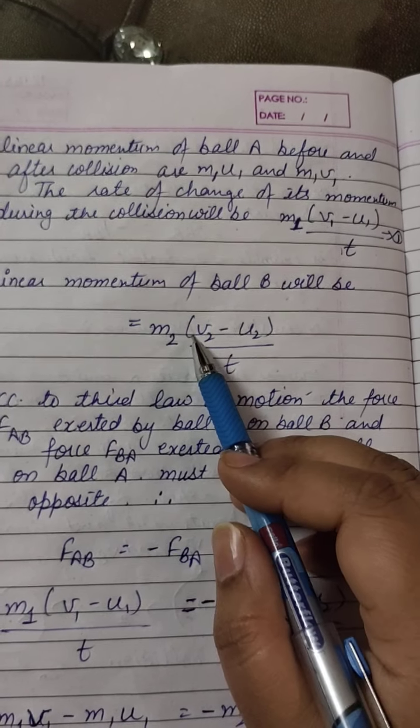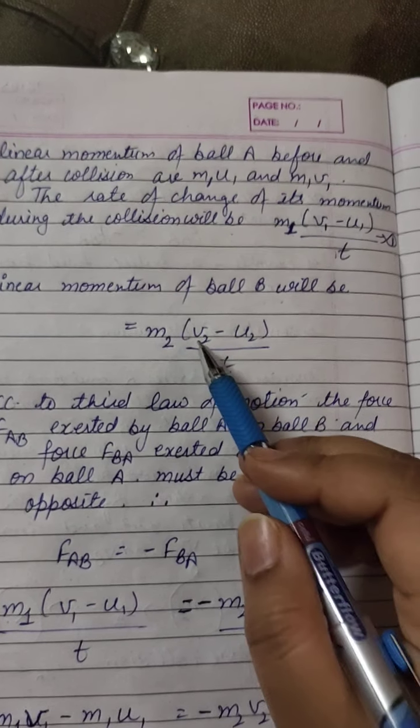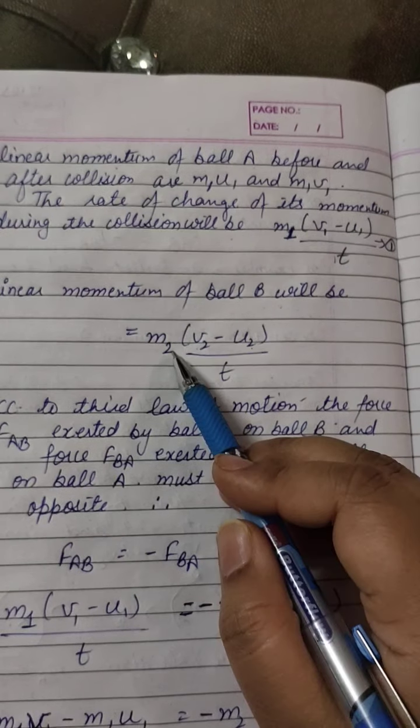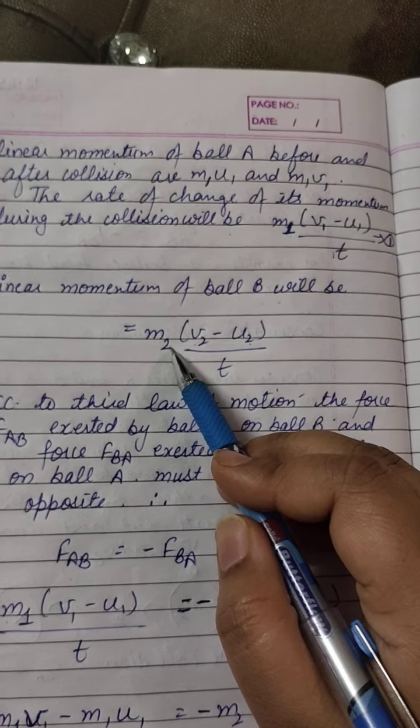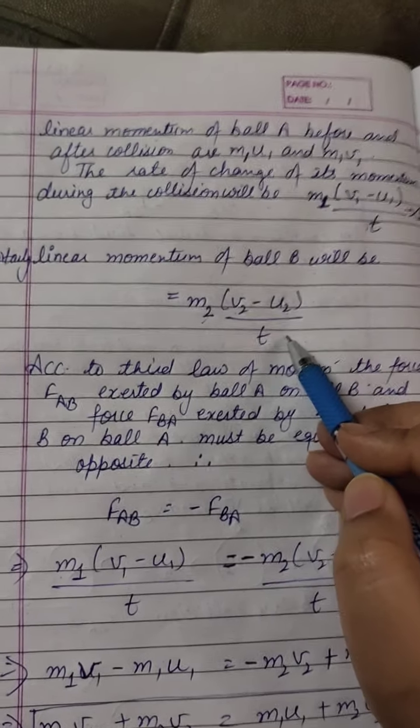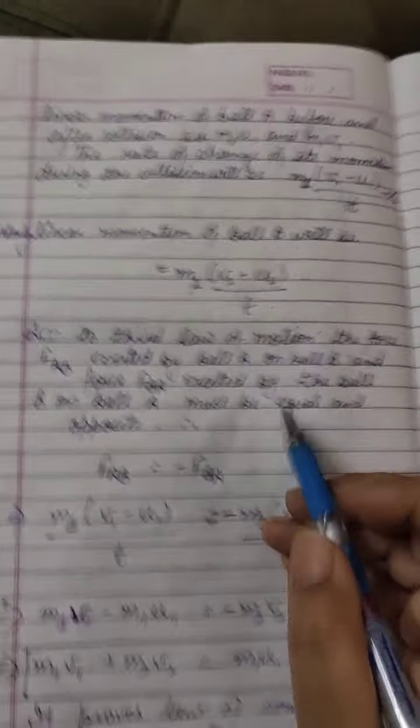Similarly, for ball B, the final velocity is V2 and initial velocity is U2, and the mass of body B is M2. So the relation will be M2 times V2 minus U2 upon T. Now as we know, according to third law of motion...